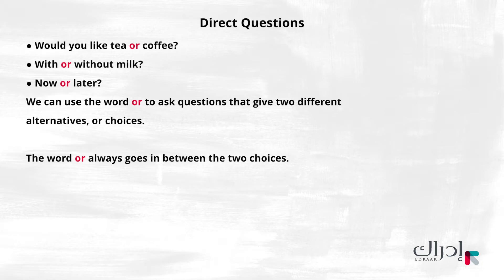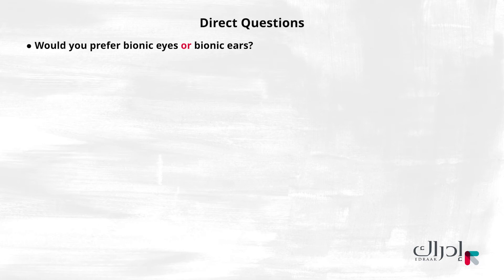Notice that the word OR always goes in between the two choices. When the two options are two different choices, like bionic eyes or bionic ears, we say one of them, then the word OR, and then the other choice. Would you prefer bionic eyes or bionic ears?